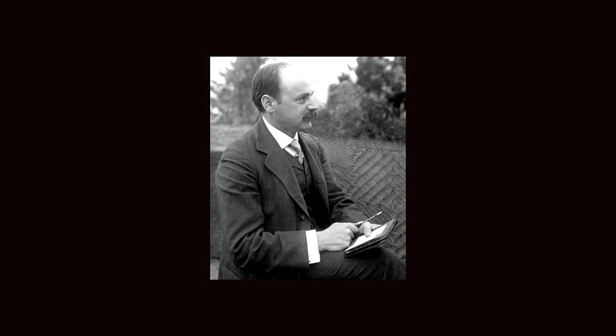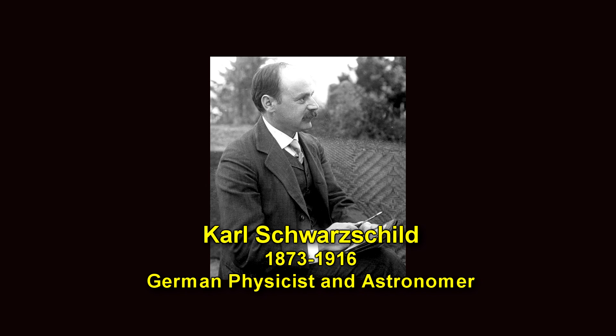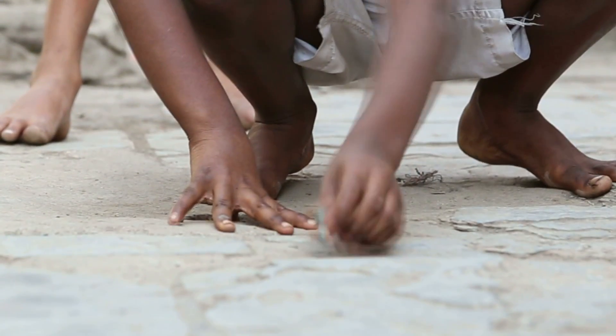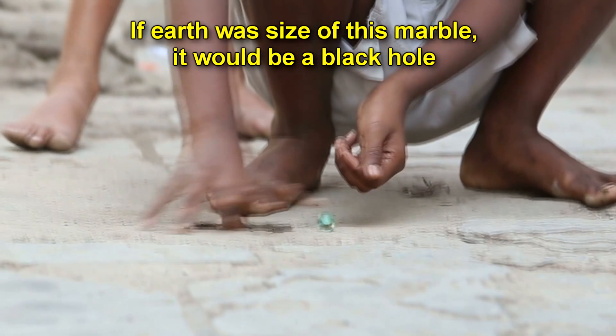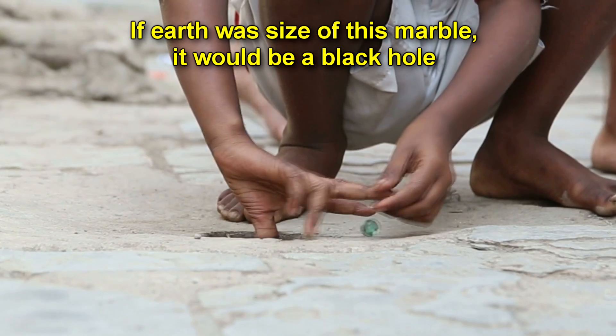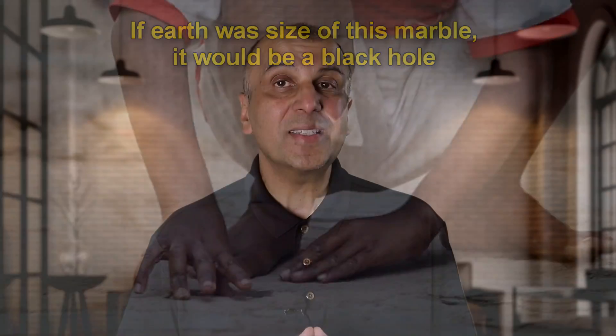Carl Schwarzschild calculated using Einstein's equations that anything with a mass can theoretically become a black hole if the mass was compressed enough. If you compressed earth into the size of a marble about one and a half centimeters in diameter, it would become a black hole. Similarly, if you compress the sun to a sphere about six kilometers in diameter, it would become a black hole.